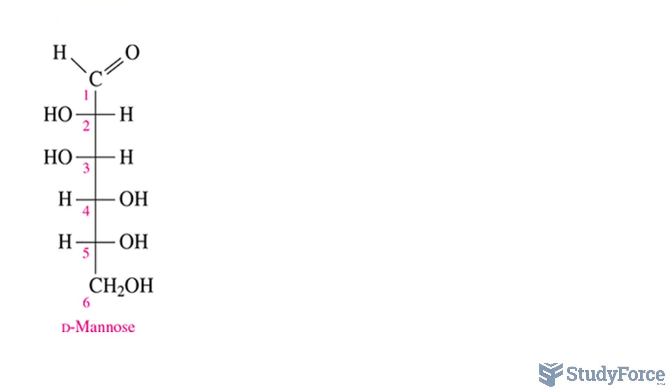Take a look at the Fisher projection model for mannose. We are told that it's D-mannose, and the reason why it's a D-stereoisomer is because this chiral carbon that's furthest away from the top of the molecule has its hydroxyl, or OH, written to the right of the carbon, which suggests it's a D-stereoisomer.